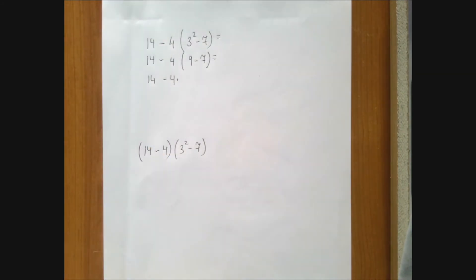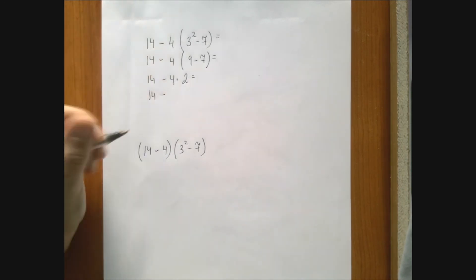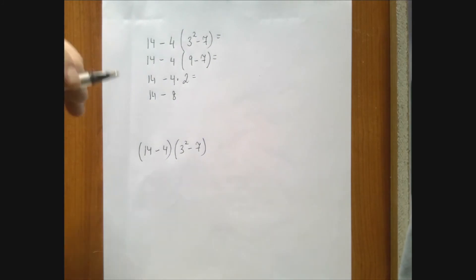Now we're done with the parenthesis. We have a multiplication and a subtraction. Multiplication is stronger, so from 14, we subtract 4 times 2 is 8. And finally, the subtraction, 14 minus 8 is 6.